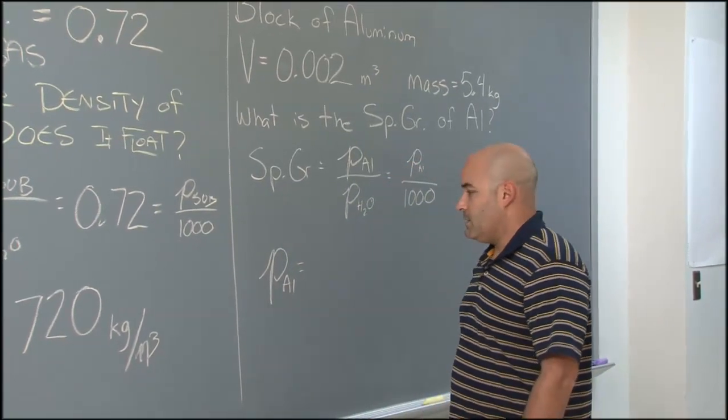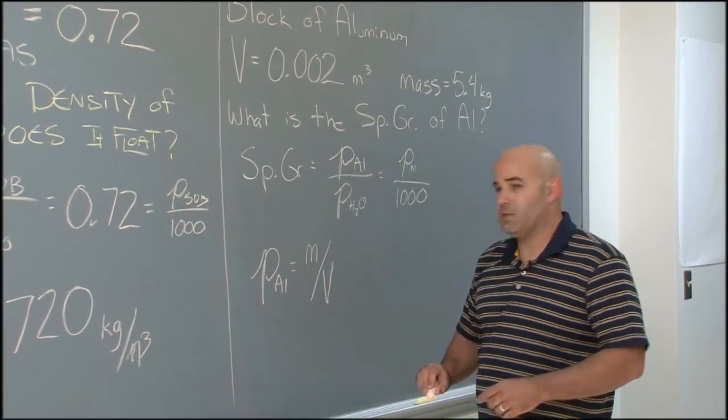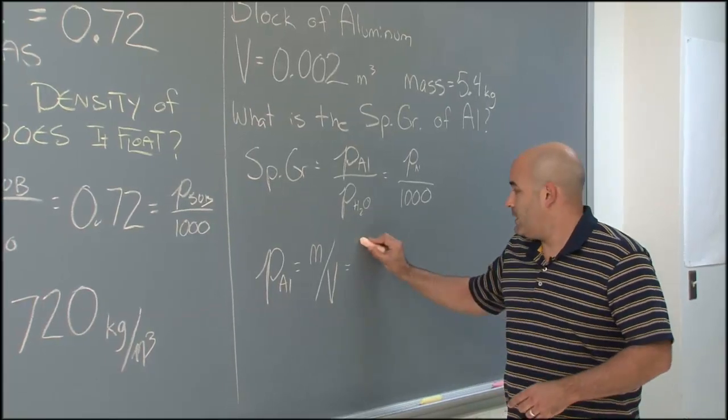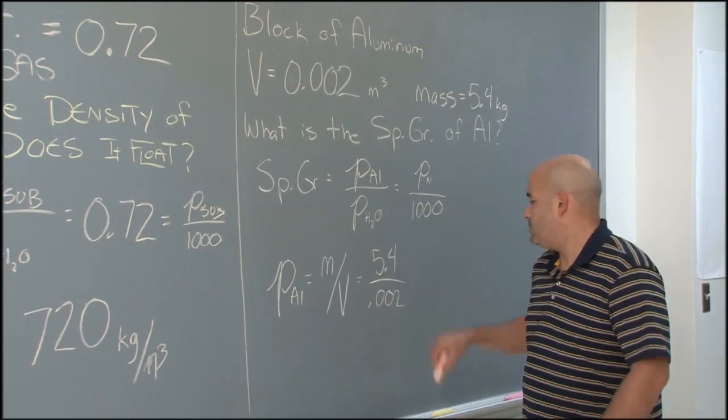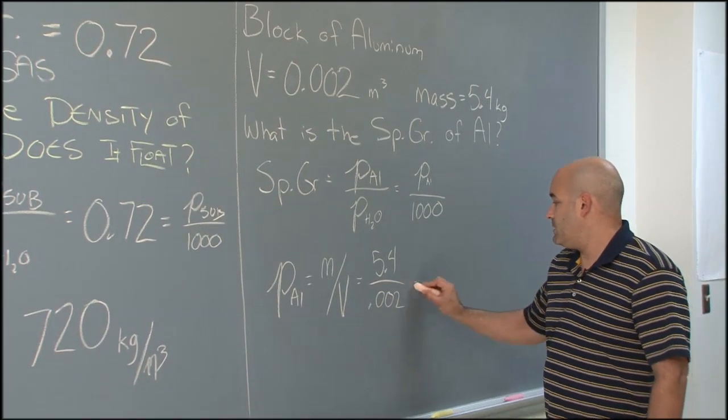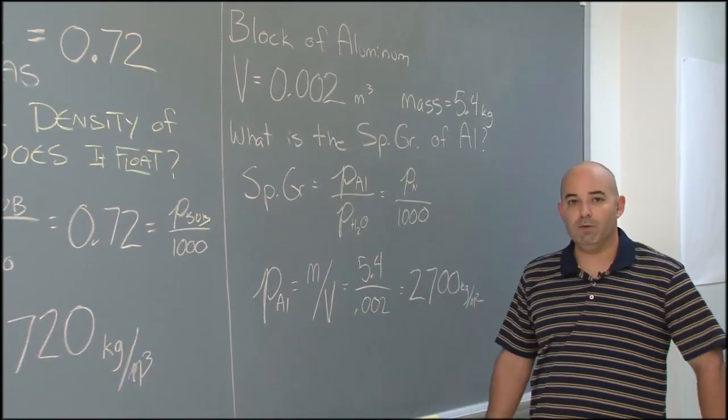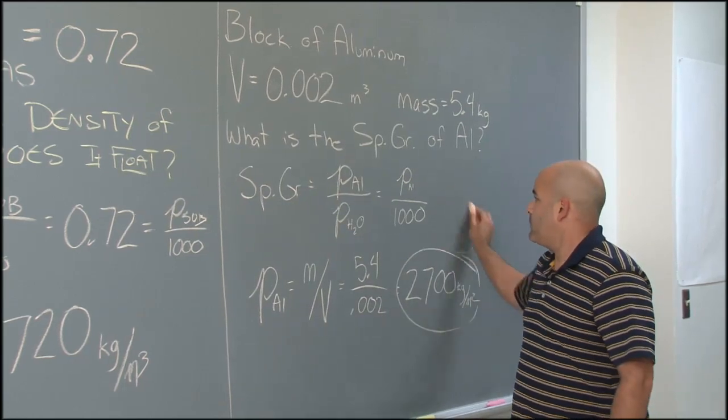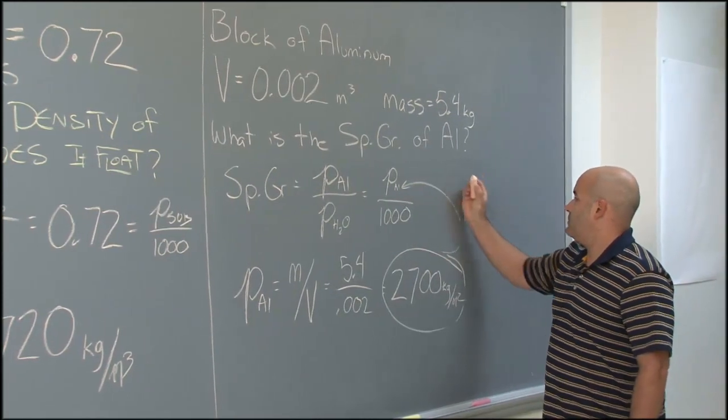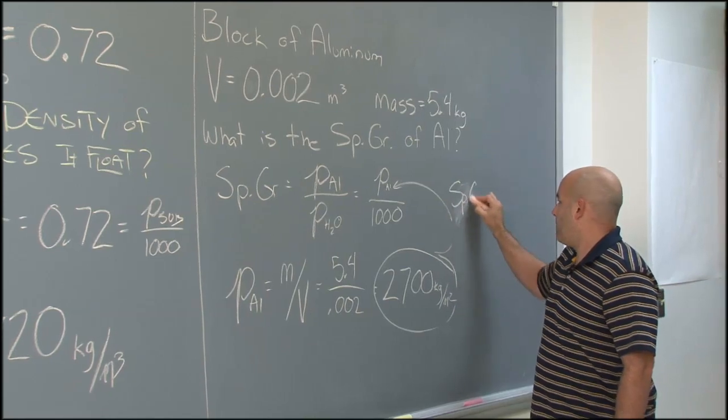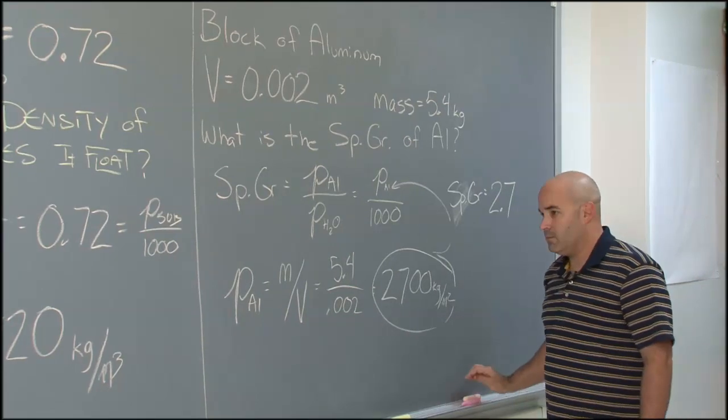Density of aluminum. I go back to the definition of density, which is the same thing as the formula for density. It's how much mass is there in a specific volume. Well, for aluminum, we have a mass of 5.4 and a volume of 0.002, which gives us a density of 2,700 kilograms per meter cubed. Take this number, put it right here. We are all set. 2,700 divided by 1,000. I got the density. Excuse me. Specific gravity. For aluminum, 2.7. There we go.